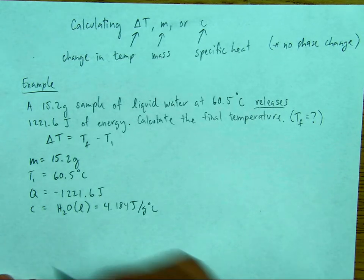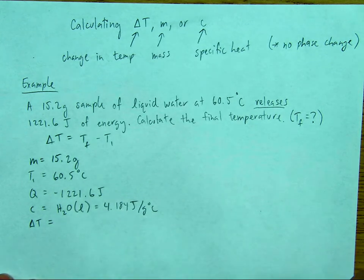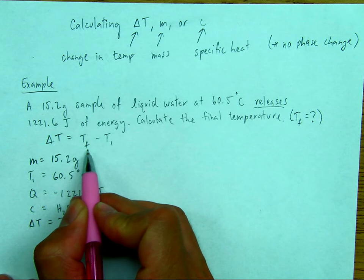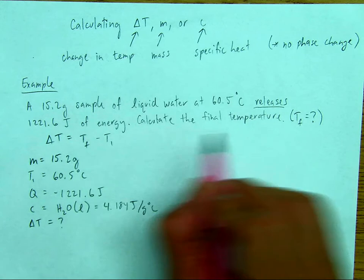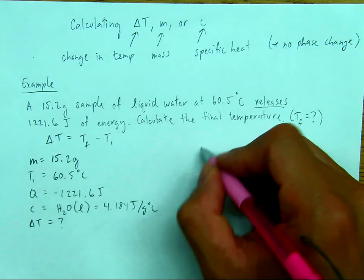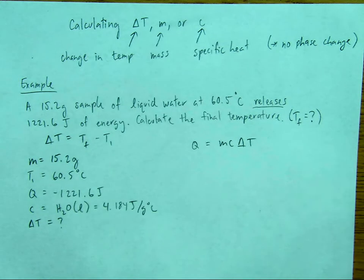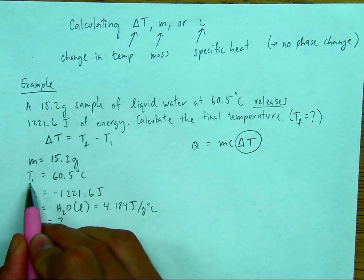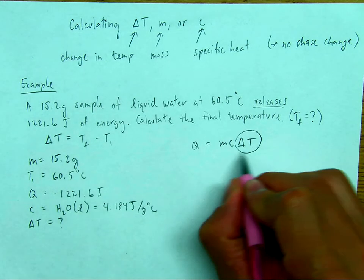Okay. So now I know that I'm going to set this up to find temperature, the change in temperature. And that's going to lead me back here to find the temperature final. Okay. So let's set this up. I know that there is no phase change. So Q equals MC delta T. We're trying to find delta T because once we find delta T, since it gives us the initial temperature, we can find the final temperature.